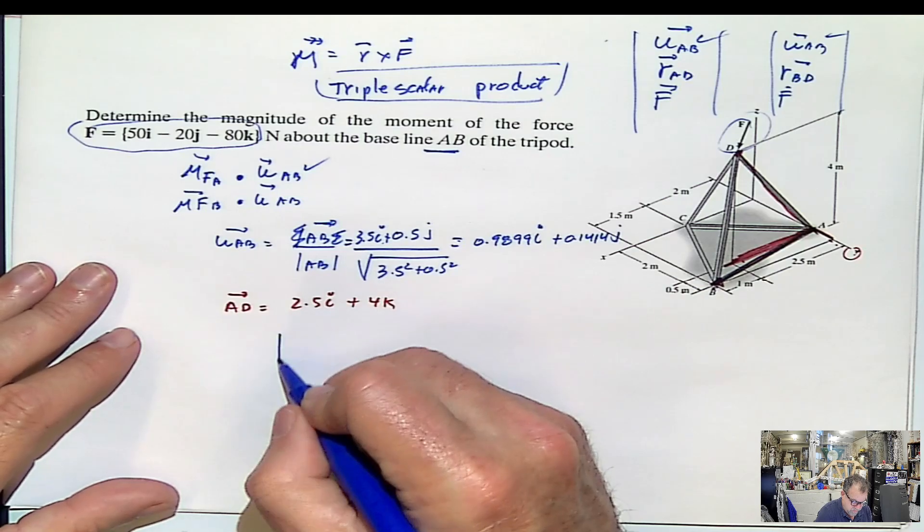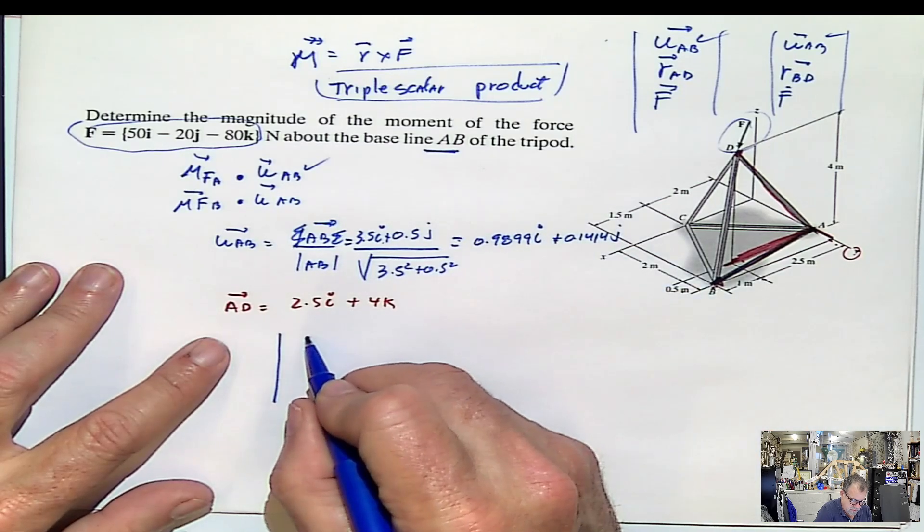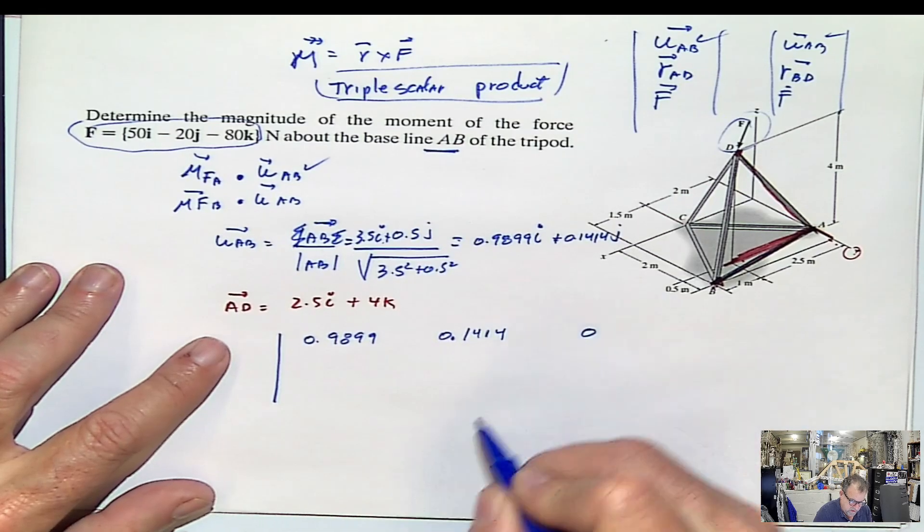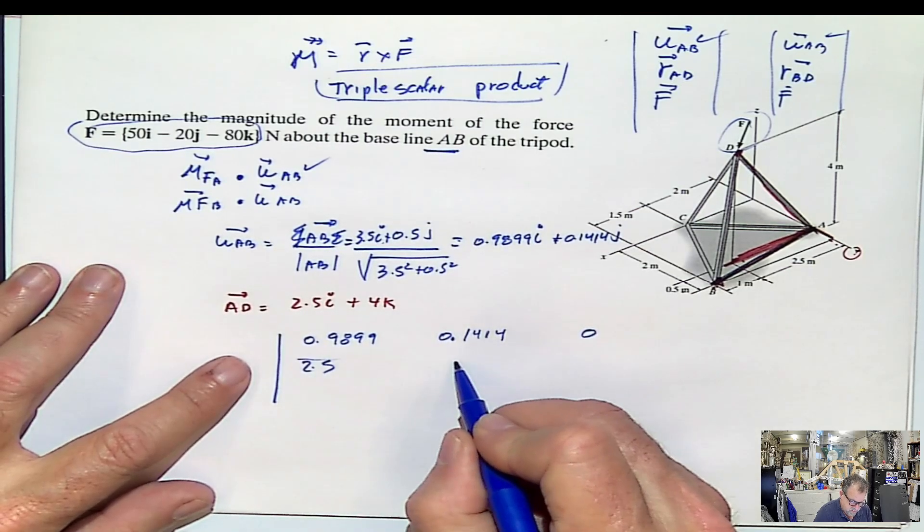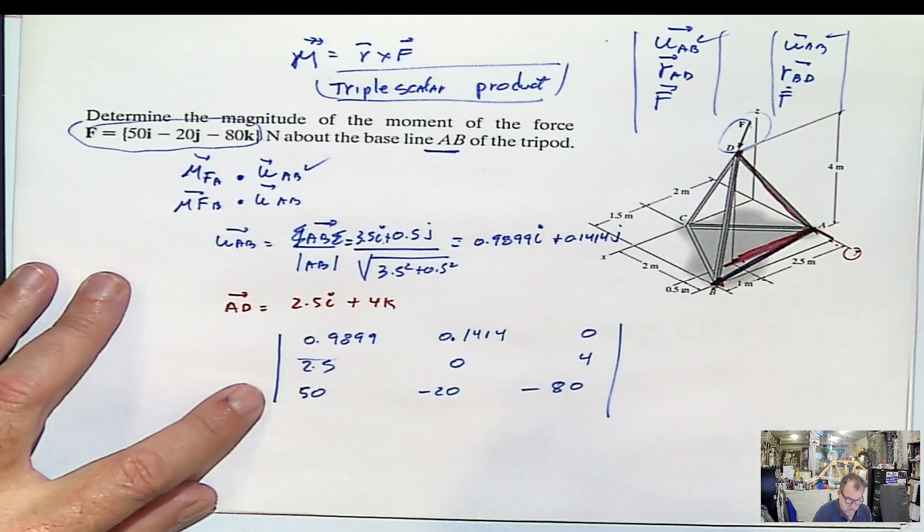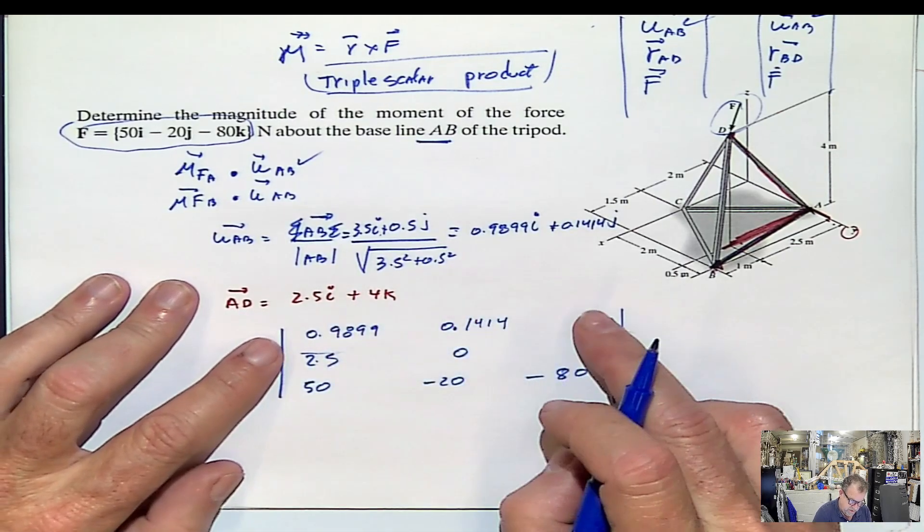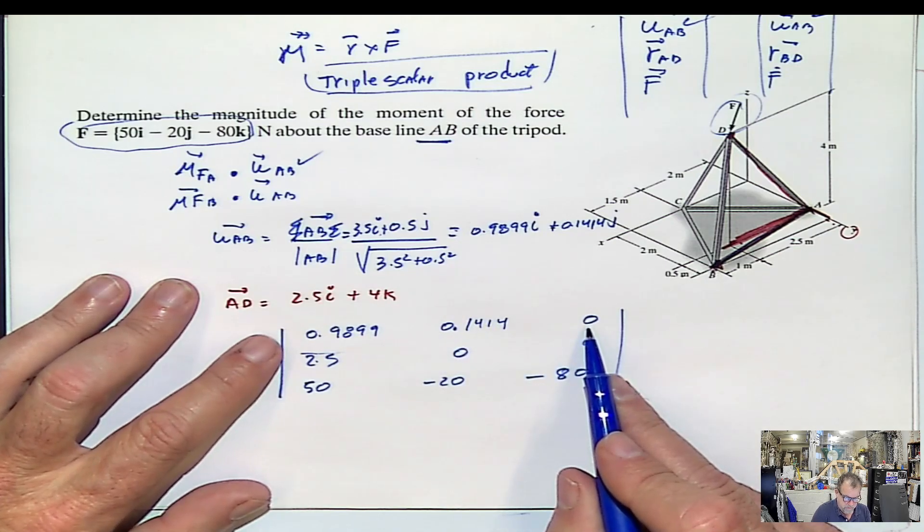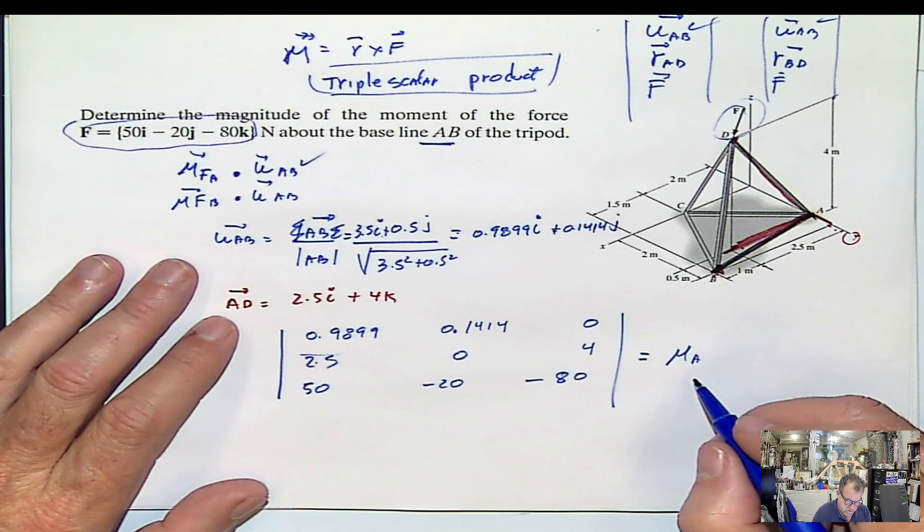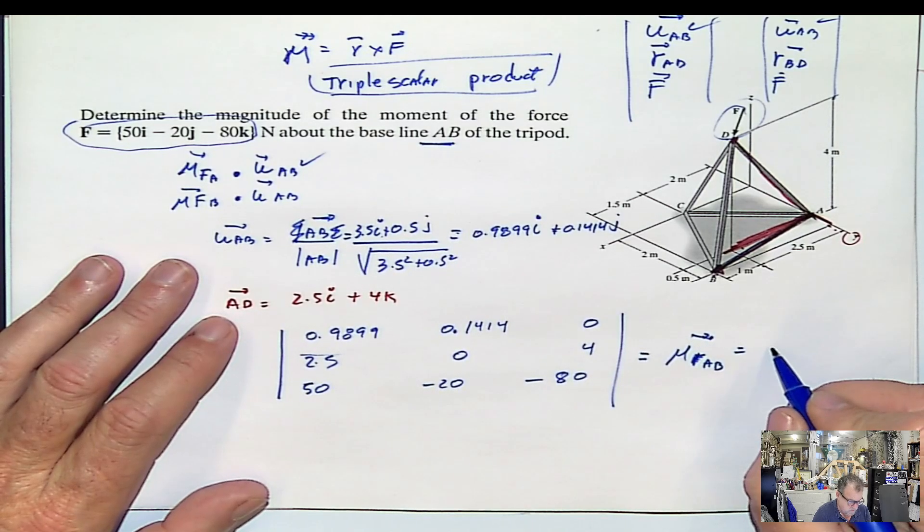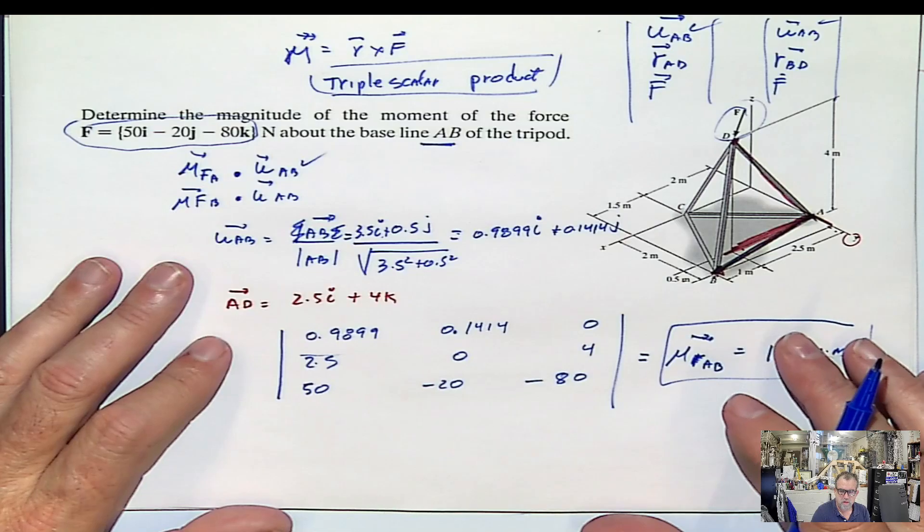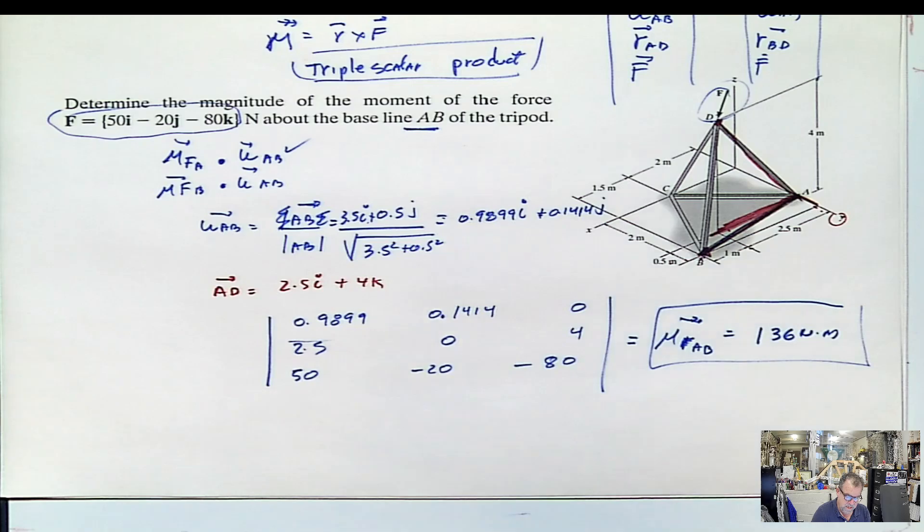I just create my triple scalar product. And the triple scalar product will be first the unit vector of the line, 0.9899, 0.1414, 0. Then I put the arm, 2.5, 0, 4. And then I put here the force, 50, negative 20, negative 80. You see, it's the same determinant. But instead of putting I, J, K, I just put the unit vector of the line. When you solve this, then you're going to get the magnitude of the moment of the force F with respect to the line AB is going to be 136 newton meters. Notice that this is a number. This is scalar. It's not a vector anymore, because we are calculating how much of the moment acts in the direction.